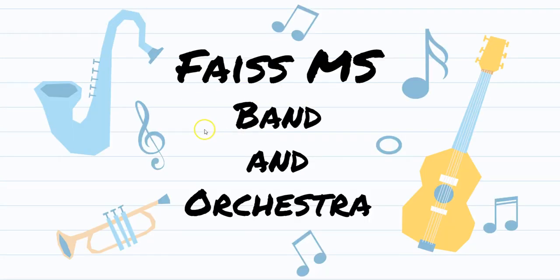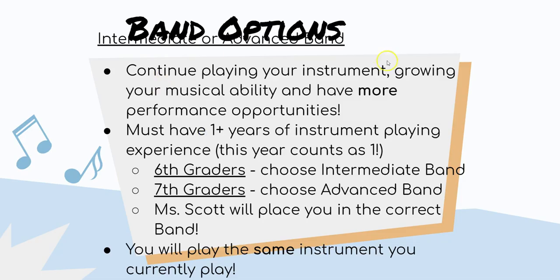If you are looking at band and orchestra — for intermediate or advanced band, you continue to play your instrument, growing your musical ability and having more performance opportunities. You must have one or more years of instrument playing experience, and this year counts as one. Sixth graders can choose intermediate band; seventh graders choose advanced band. Mr. Miscot will place you in the correct band, and you will play the same instrument you are currently playing.